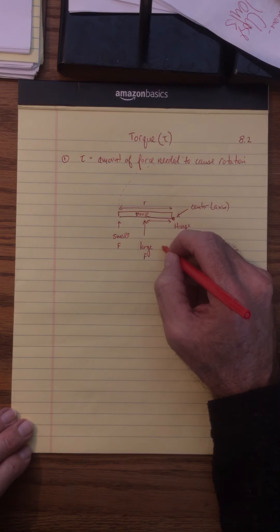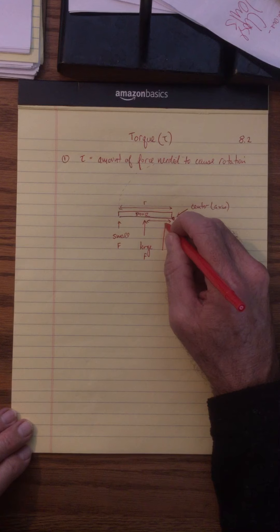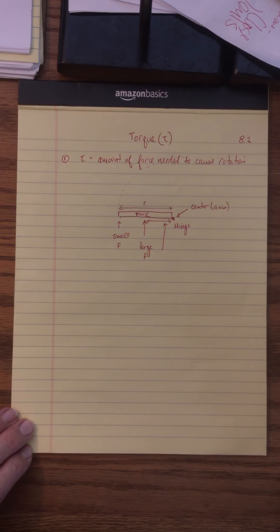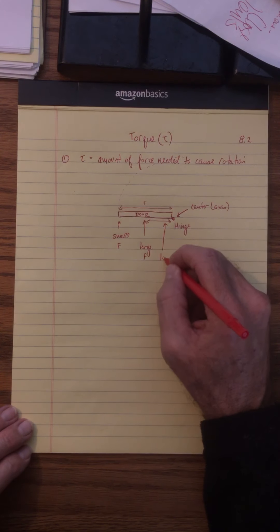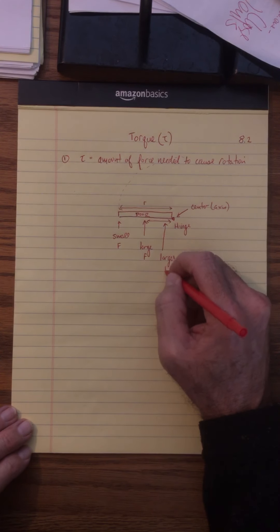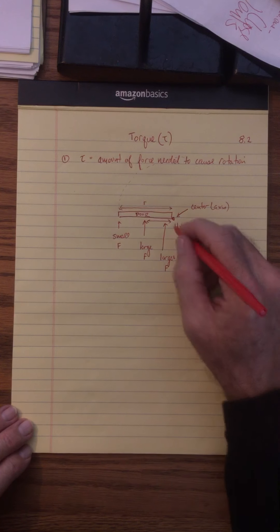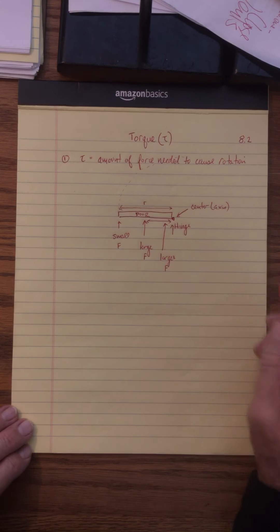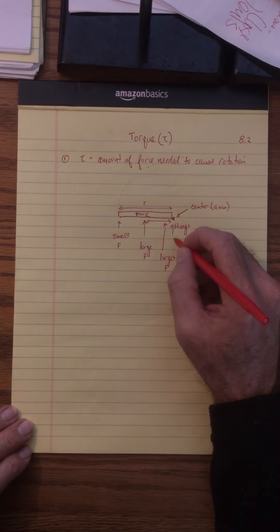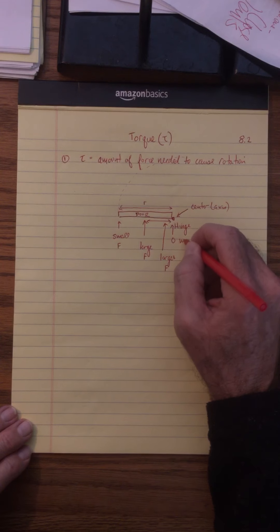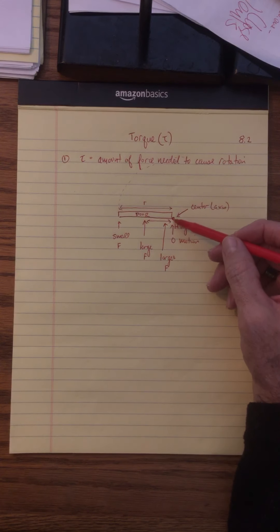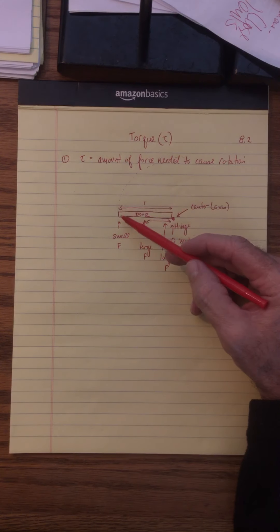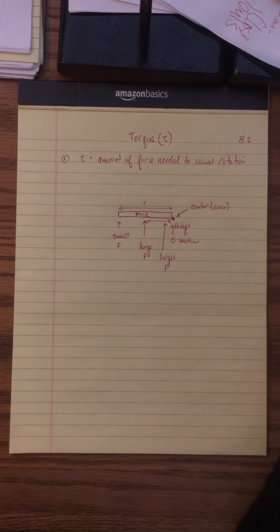I even had Eli push very close to the hinge — that required an even larger force. If you actually apply a force to the hinge itself, you get zero motion, because you're applying your force not to the thing that's going to be rotating, but to the axis itself.